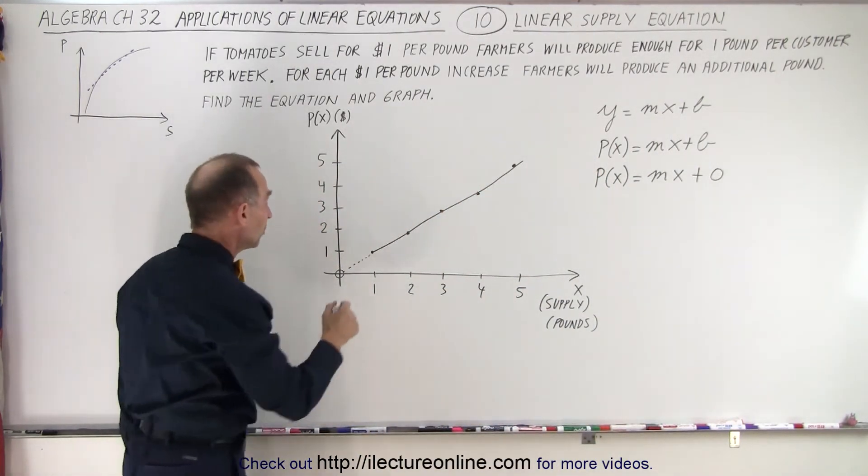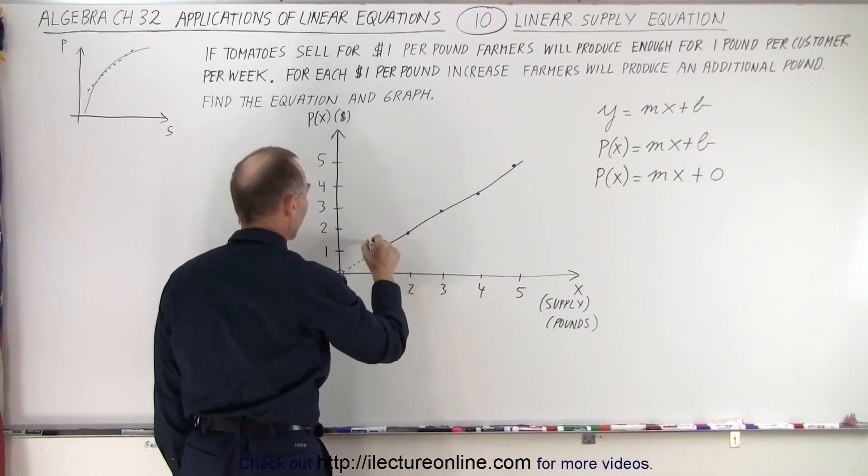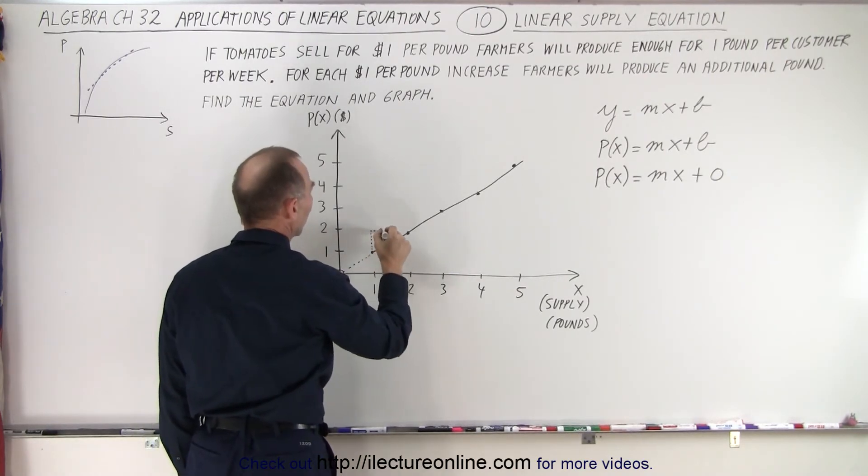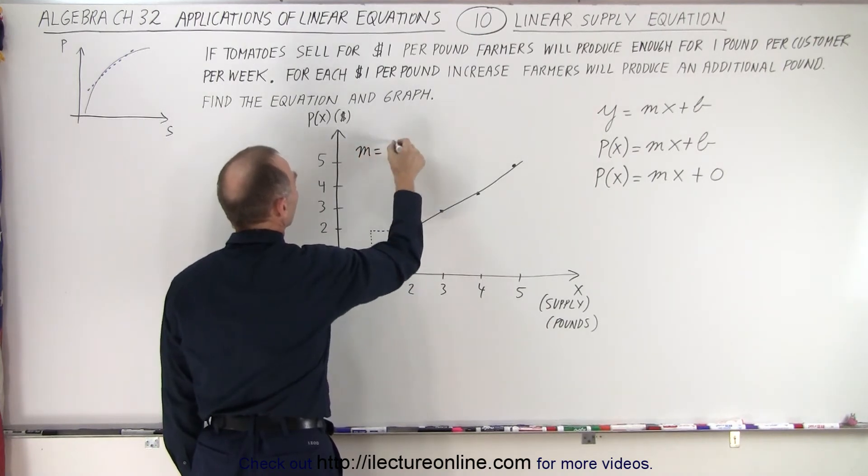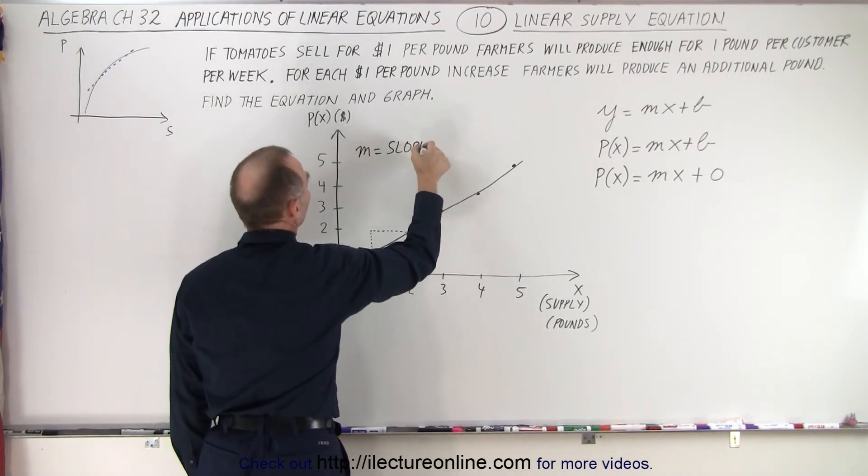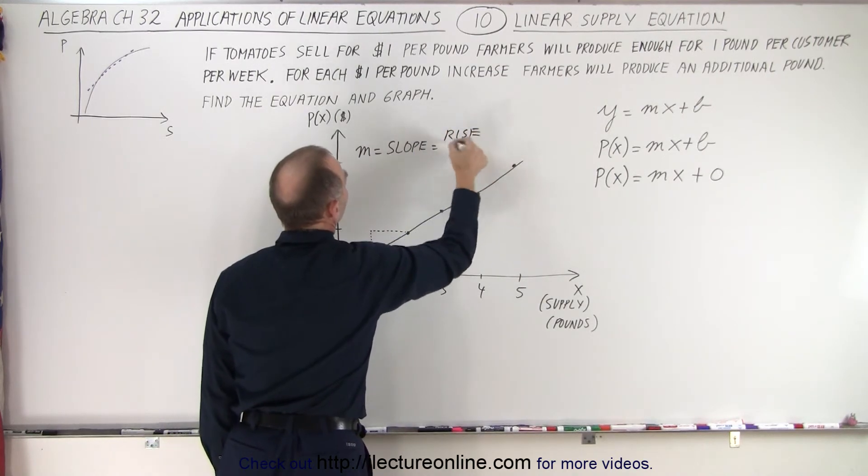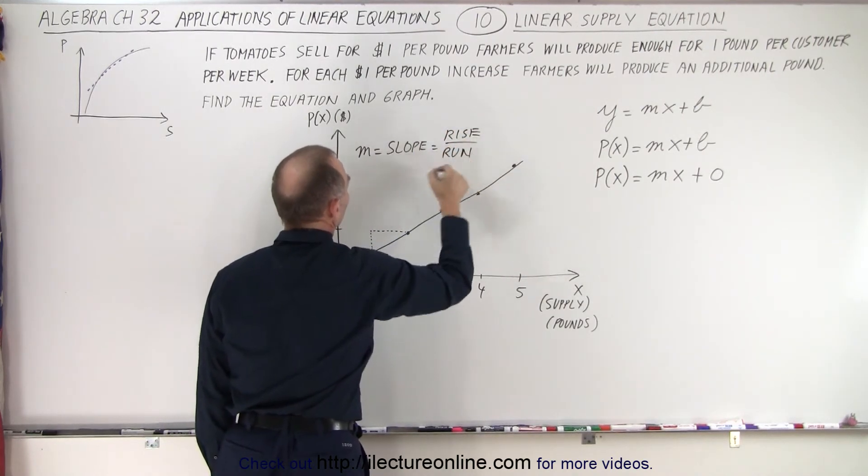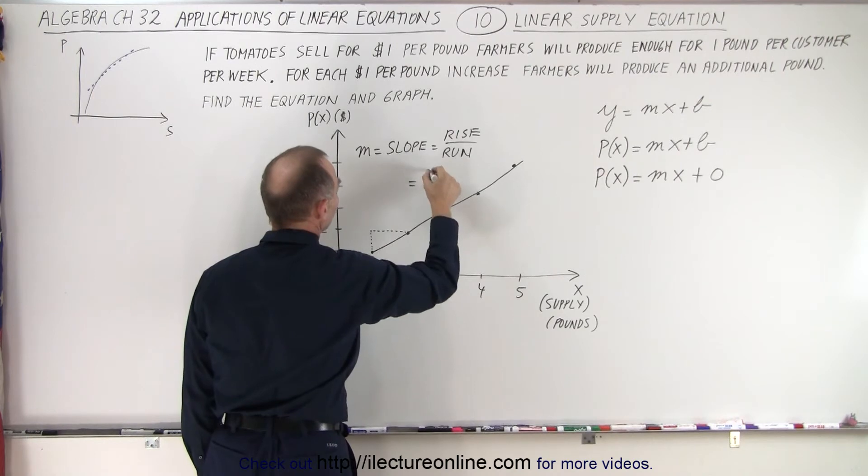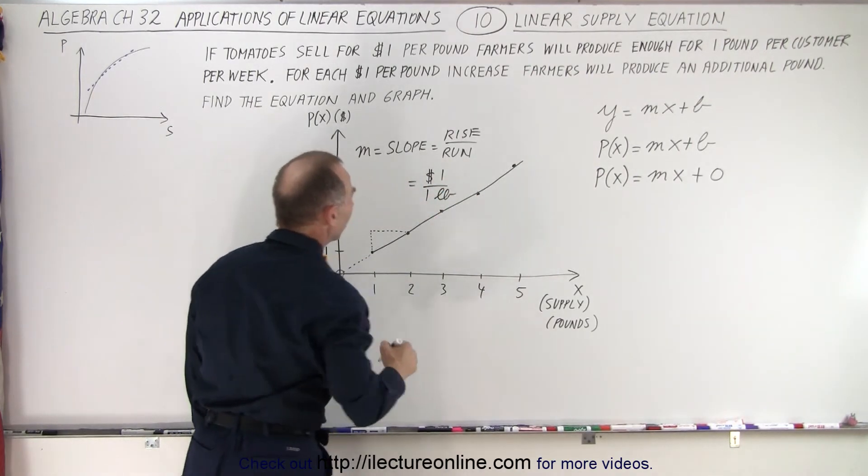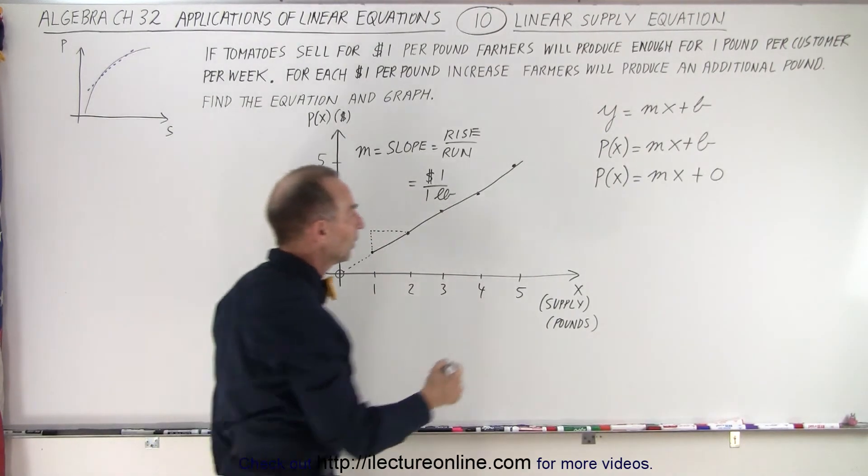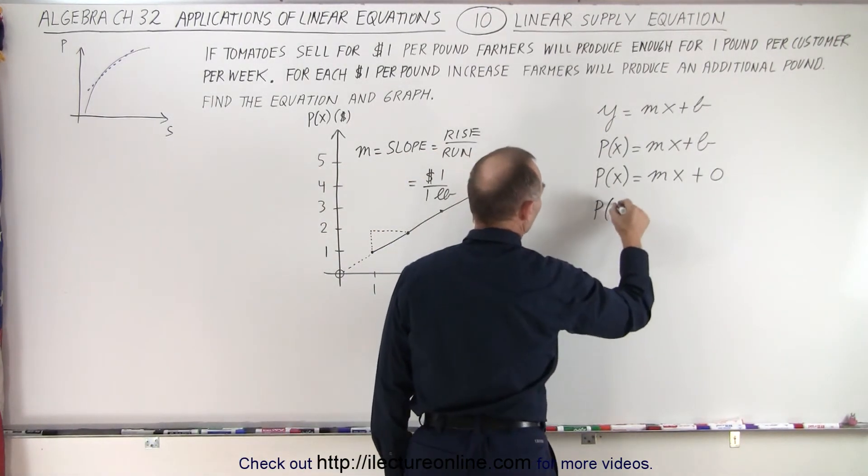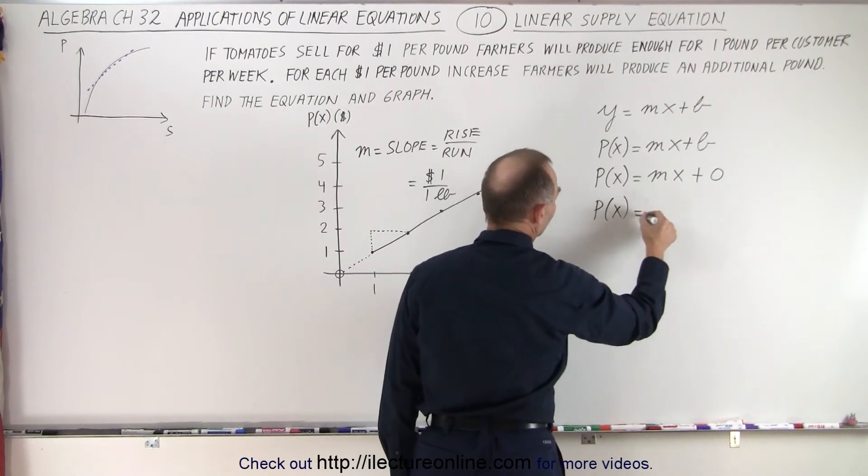And now the slope, the slope would be the rise over the run. So the rise would be $1, the run would be one pound. So the slope m, which is equal to the rise over the run, in this case, that would be equal to the rise of $1 per one pound. The rise over the run, a positive one. So we can see that the price as a function of x, x being the supply, is equal to 1x. And then the plus zero, of course, drops out.